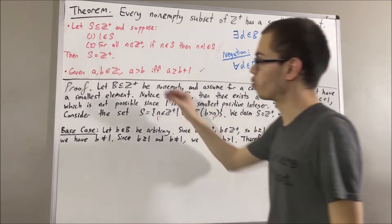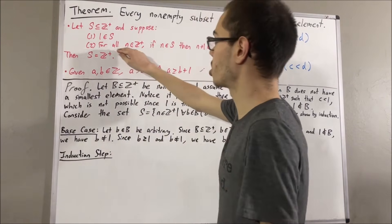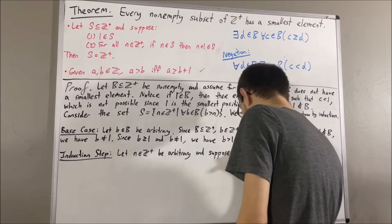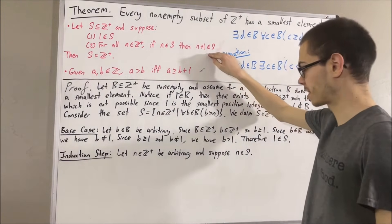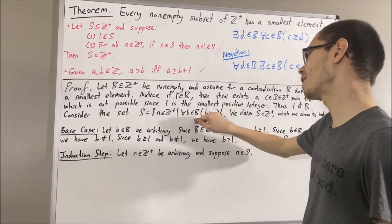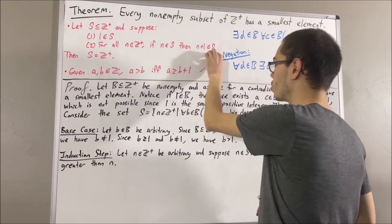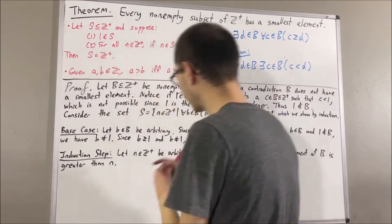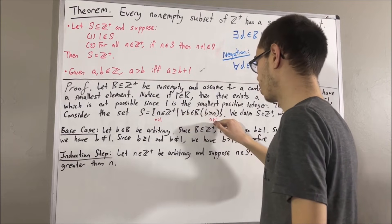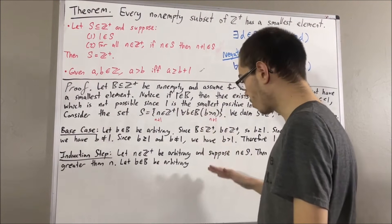Now let's move on to the induction step, where we prove this statement. In the induction step, we give ourselves an arbitrary positive integer n, and we suppose n is an element of S. From here, the whole goal is to show that n plus 1 is an element of S. Since n is an element of S, this means that n is a positive integer with the property that every element of B is greater than n. To show that n plus 1 is an element of S, we want to show that every element of B is greater than n plus 1. To prove that, let's give ourselves an arbitrary element of B — call it b — and we want to show that b is greater than n plus 1.